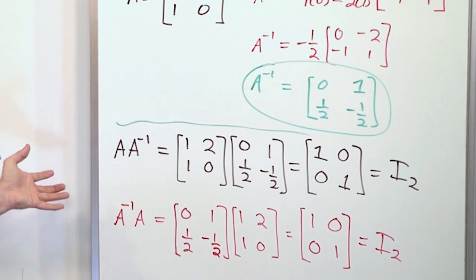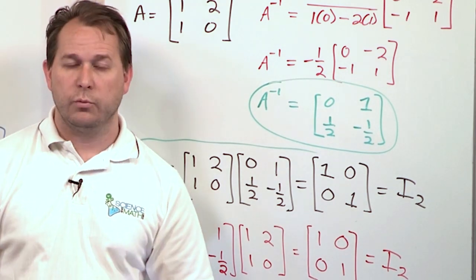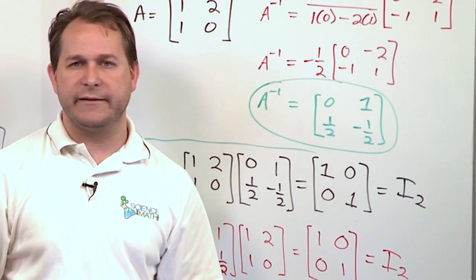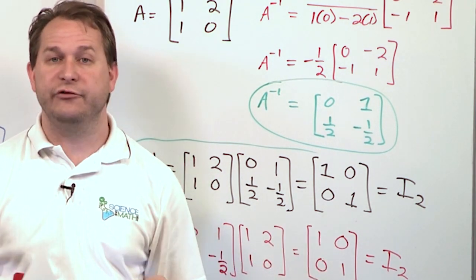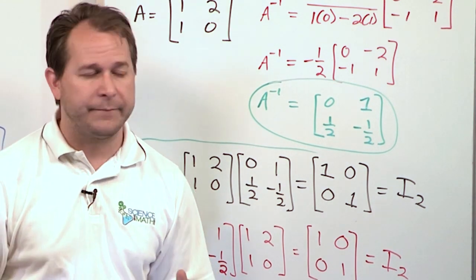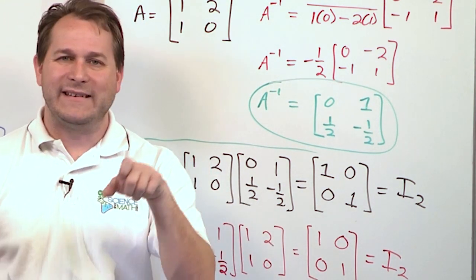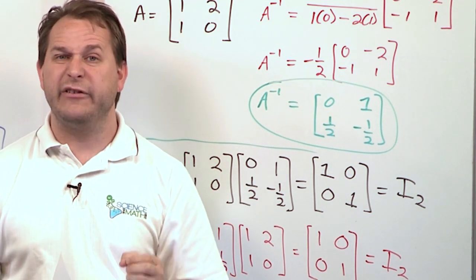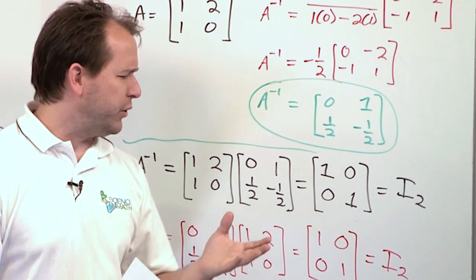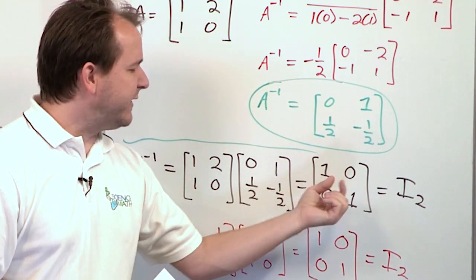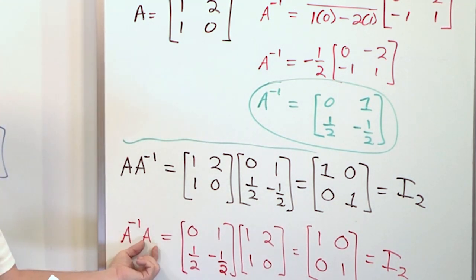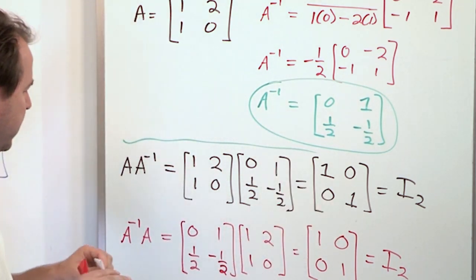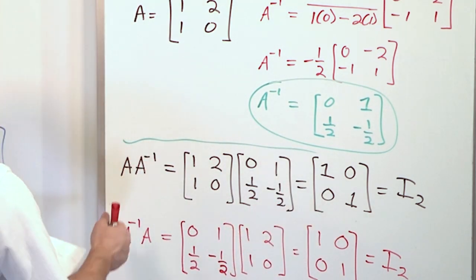So the point is that in general, when you take any two random matrices and flip the order, you're probably going to get something different. But in the case of multiplying a matrix times its inverse, you can do the multiplication either way, because the inverse matrix is a very special case. The order does not really matter — you get the identity matrix either way.